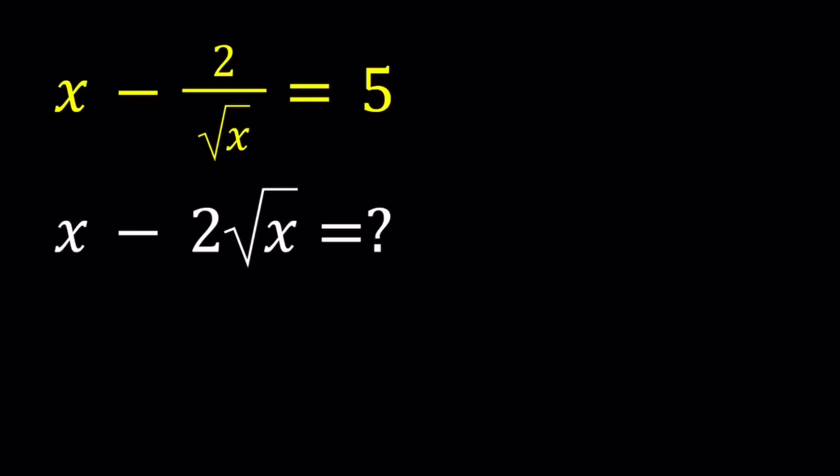Hello everyone. In this video we're going to be dealing with a radical equation. We have x minus 2 over square root of x equals 5 and we're supposed to find the value of x minus 2 times the square root of x.